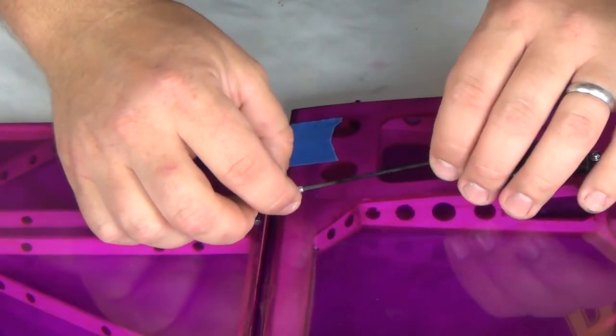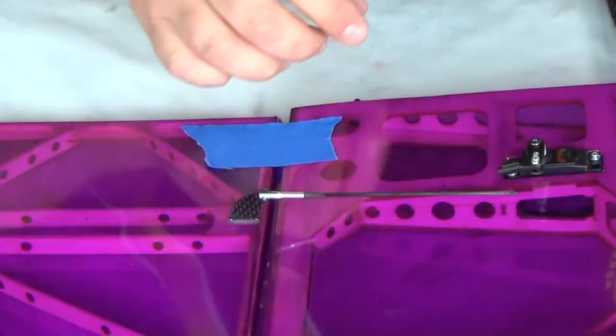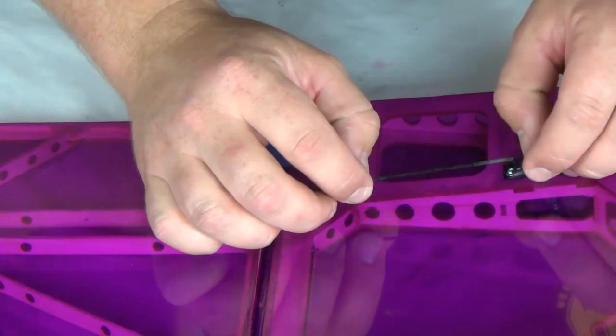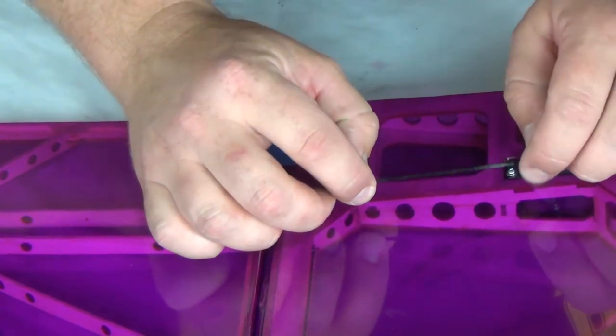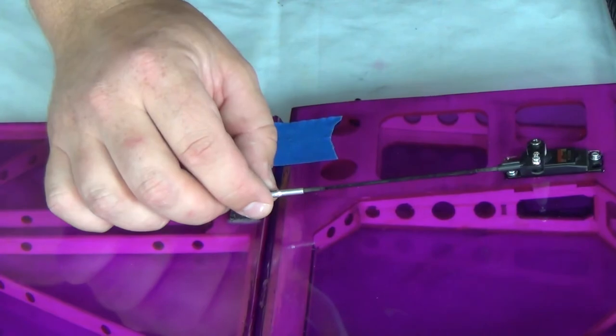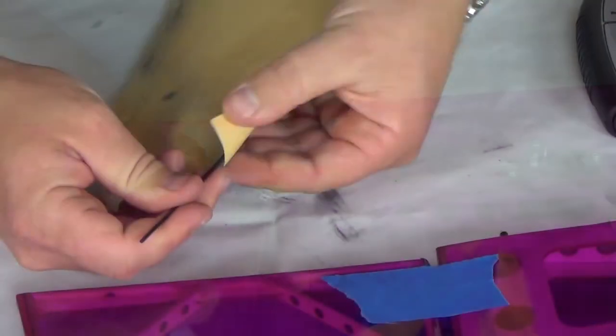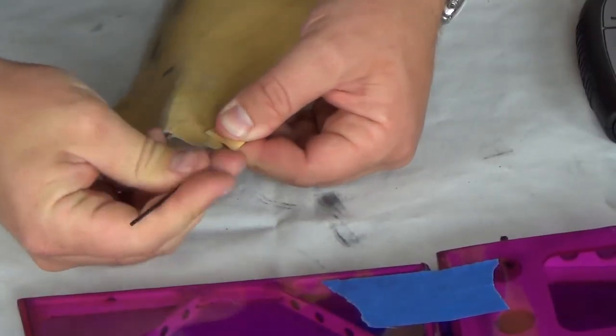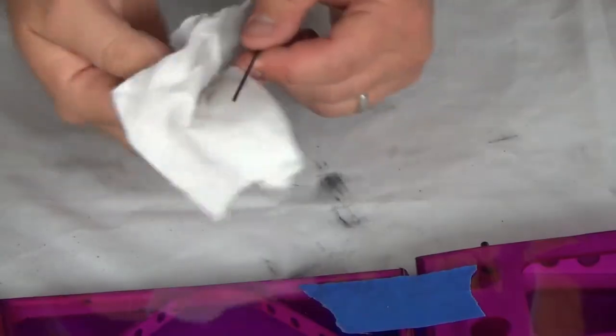Double check your cut by reinserting it and testing the fit. It's better to cut the rod a millimeter or two short, rather than leaving it too long. The geometry of these linkages is critical. Then lightly scuff the carbon fiber rod where the epoxy will bond and clean it with denatured alcohol.